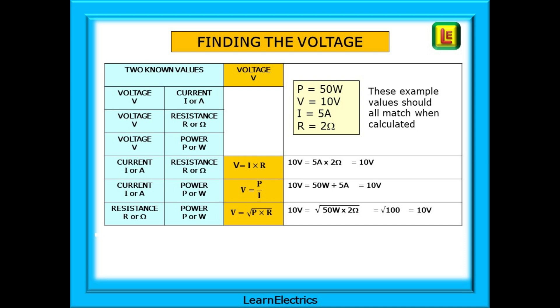For instance, if we know the current and resistance, the matrix tells us that V equals I times R, and putting the numbers to this from the table, 5 amps times 2 ohms is 10 volts. If we know the current and power, then P over I is the calculation. 50 watts divided by 5 amps is 10 volts, and so on.